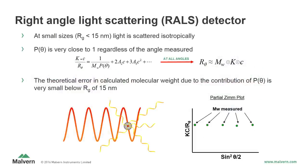The right-angle light scattering detector positions the detector at a 90-degree angle from the incident beam. This detector works best for relatively small molecules, roughly smaller than 15 nanometers, because they scatter light isotropically — the same in all directions. Since the intensity of the light is the same in all directions, the angle of observation becomes irrelevant, as shown in the partial Zimm plot in which the molecular weight observed is the same regardless of angle. This means the molecular weight can be determined directly by observing the intensity of scattered light at any angle. The right-angle light scattering detector provides the least amount of baseline noise as a result of its orthogonal placement relative to the incident light beam, thus providing the best signal-to-noise ratio.